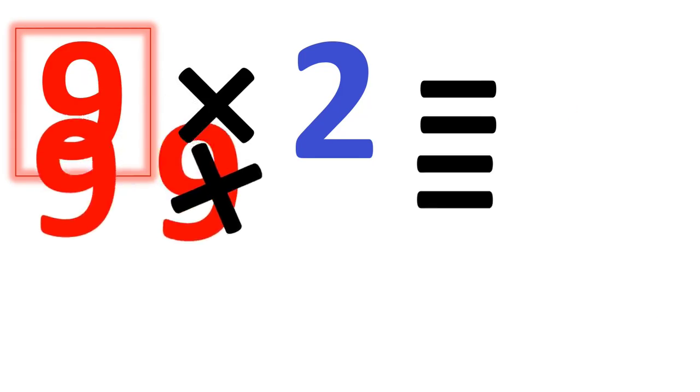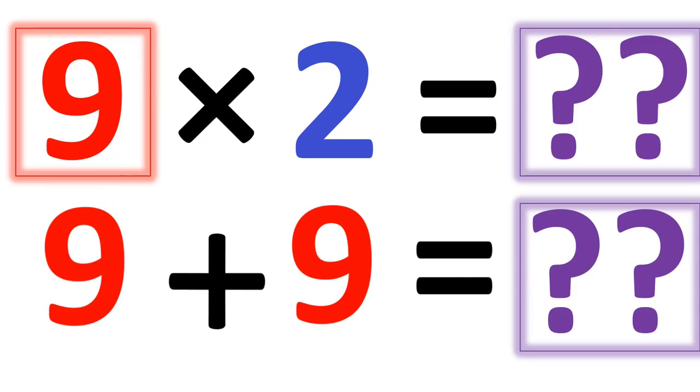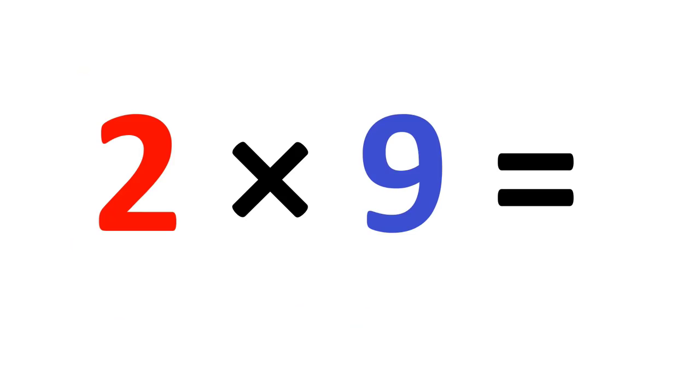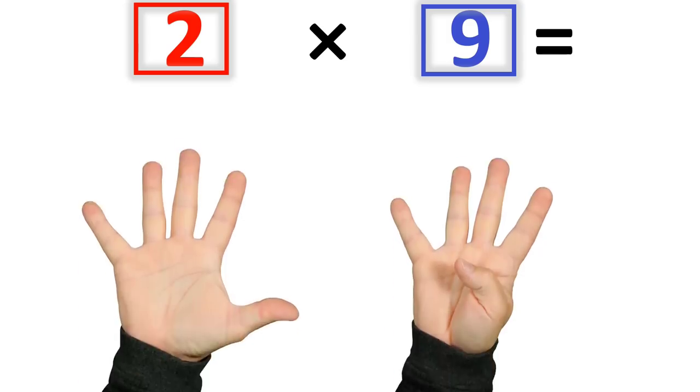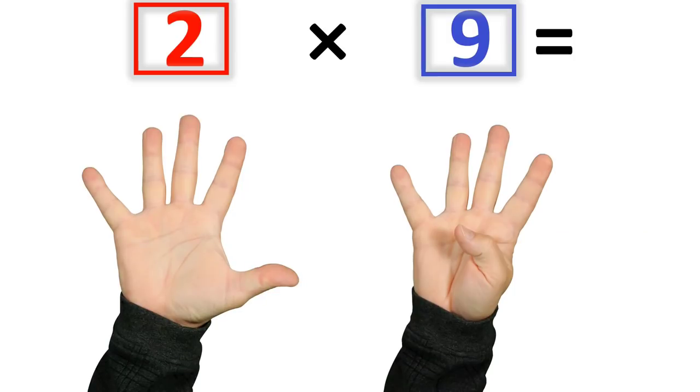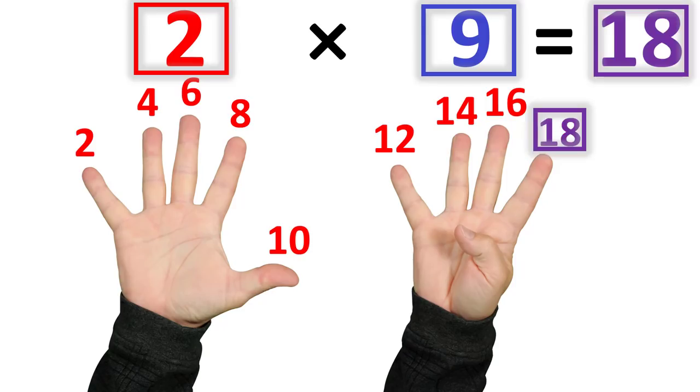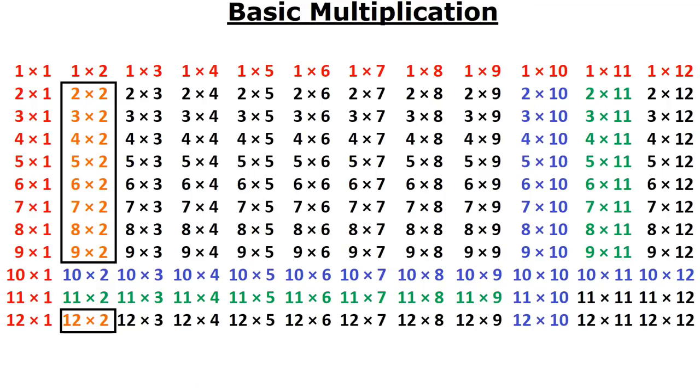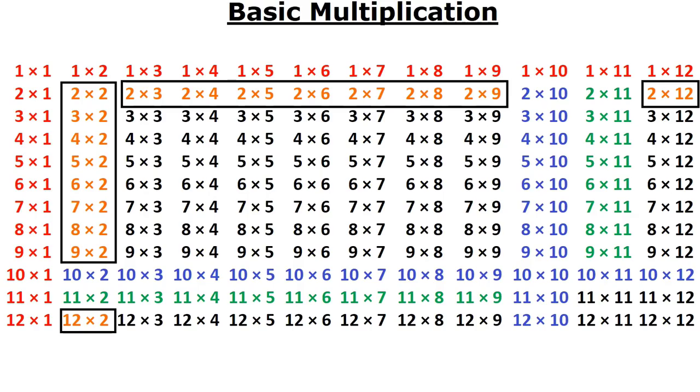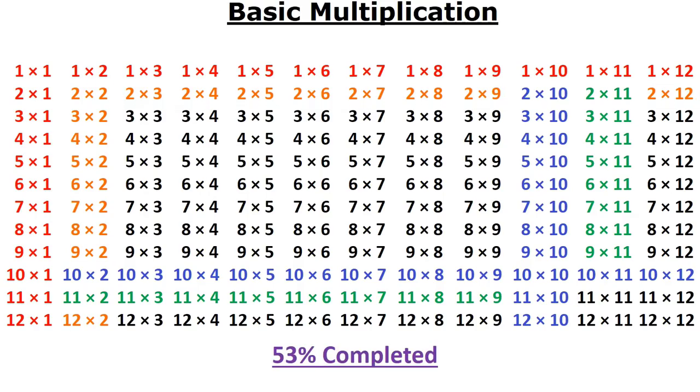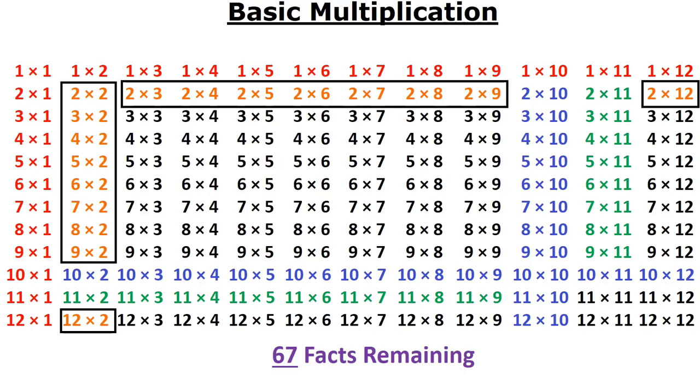Well, if you forget some of your basic addition, there's a backup method. That's the skip counting method. So if you take 9 times 2 or 2 times 9, what you do is, you skip count by the number 2 9 times. So you go 2, 4, 6, 8, 10, 12, 14, 16, and then you stop at 18 because that's the 9th term. Very easy, right? Well, guess what? From those 4 rules, just 4 rules, you now know 77 math facts and you only have 67 remaining.